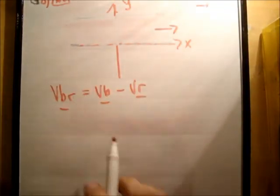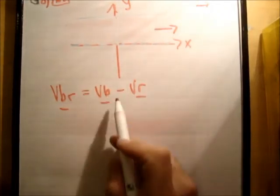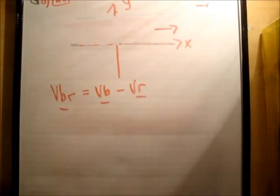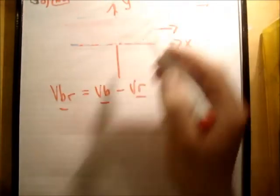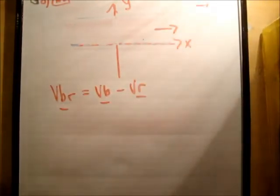So the boat VB is if you were in a helicopter above what you would see the boat doing, whereas VBR is the guy in the boat saying this is the direction I'm going to go. He doesn't know that he's drifting down. He wouldn't notice that himself. So let's just plug in the figures.